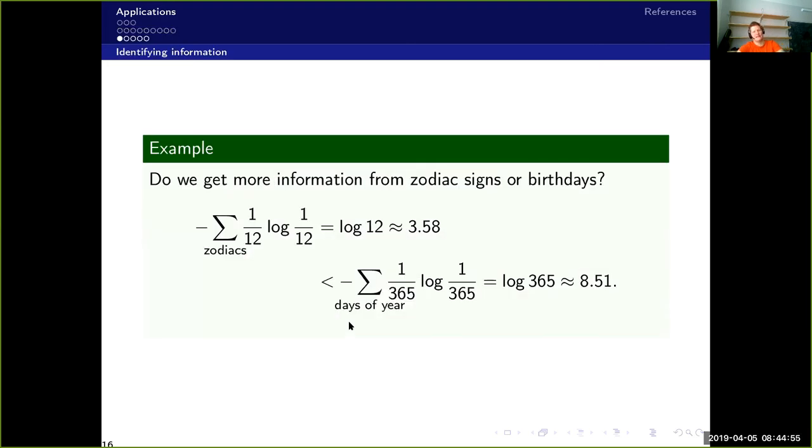Now, let's proceed to the last part, the one about identifying information. So let's look at an example first. So what do we get most information from? Zodiac signs or birthdays? Now this, everyone should have some intuition about this. And obviously the birthday should contain more information. And if we look at this and use Shannon entropy, then we see that there are Zodiac signs and there are 12 of those. So the maximum entropy is the logarithm of 12, which is roughly 3.58 bits. Whereas there are 365 days of the year, and thus the maximum entropy would be the logarithm of 365, so 8.51 bits of entropy.